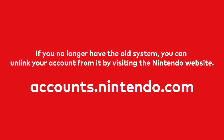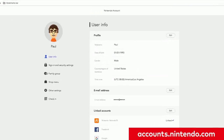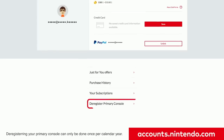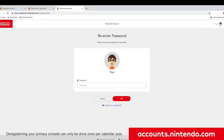If you accidentally traded in or sold your Nintendo Switch system before erasing the data from it, you can unlink your Nintendo account from the old system by going to the website accounts.nintendo.com, logging in and selecting Shop Menu. You will select Deregister Primary Console to unlink your Nintendo account from the old system.